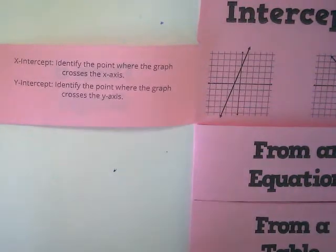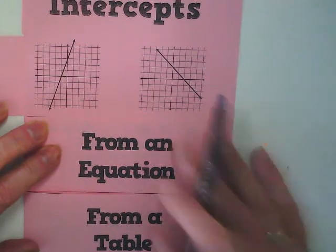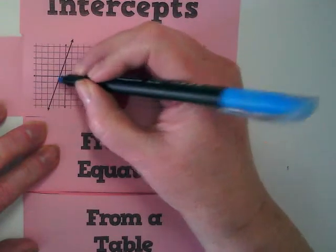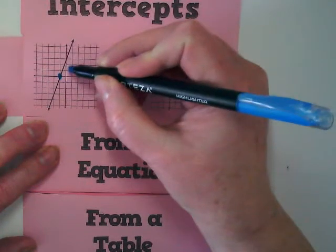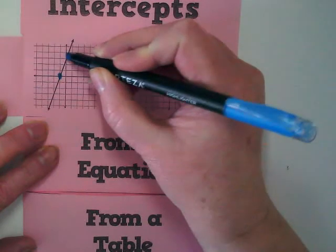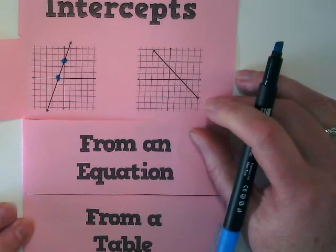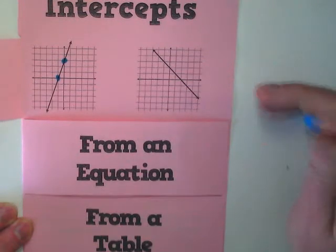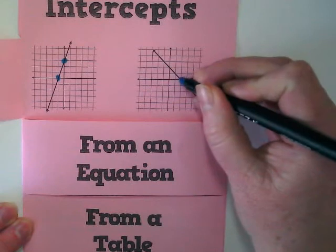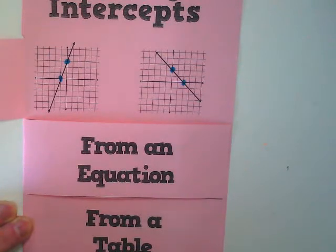Let's use our highlighters to find the x and y-intercepts of these two graphs. Here is the x-intercept. Here's the y-intercept. Can you find the x and y-intercept on the second graph? Do yours look like mine? Yes.